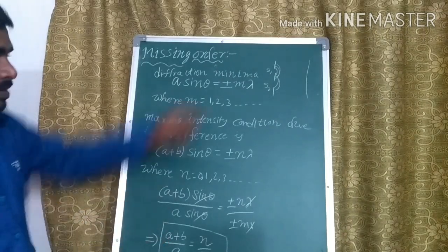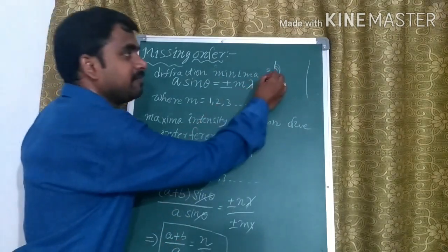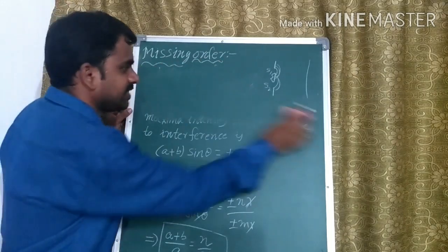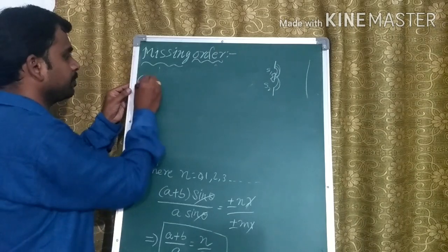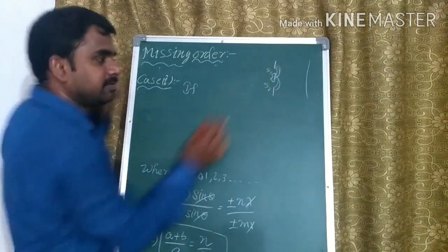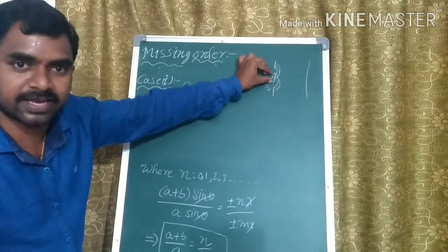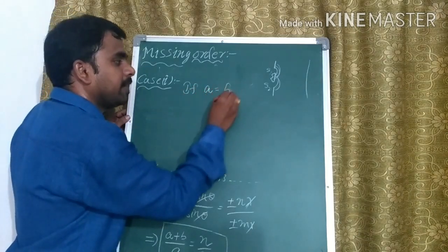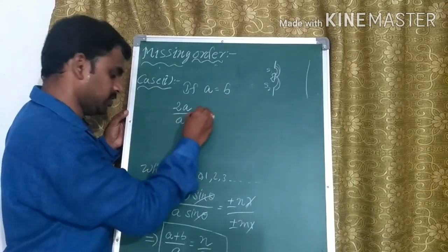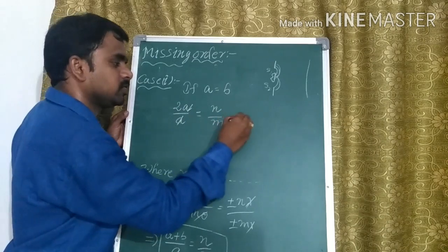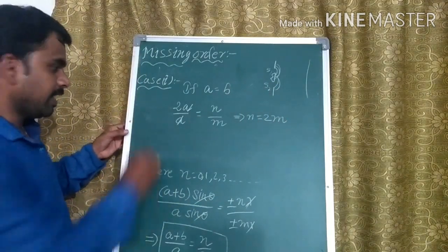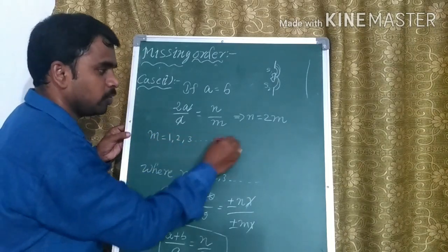Here, A is the width of each slit and B is the separation between the two successive slits. Case one: if the width of the slit equals the opaque barrier, that is if A = B, then (A + A) / A = N / M, which gives 2A / A = N / M, so N = 2M. Suppose if we substitute M = 1, 2, 3, and so on, what will happen?